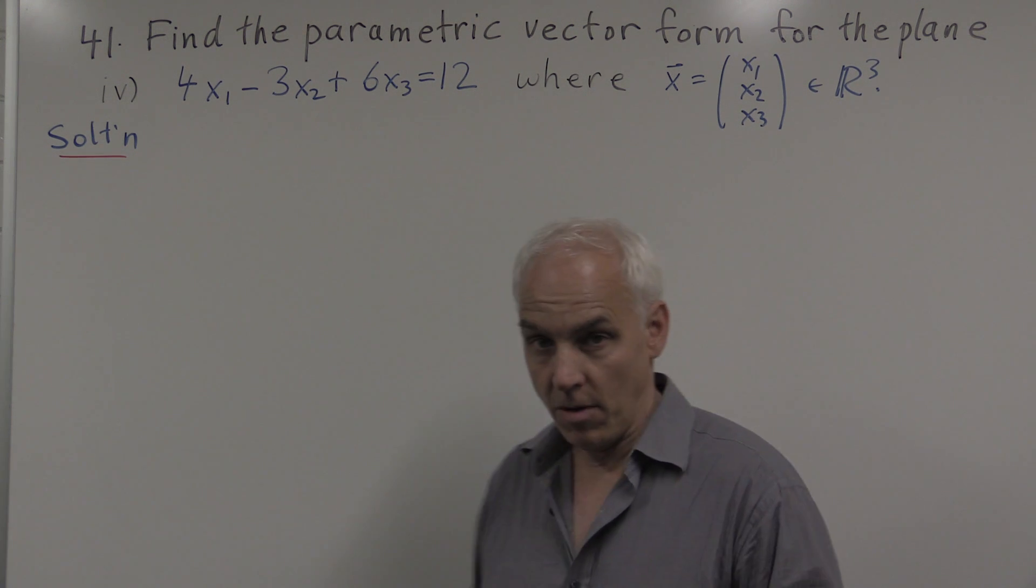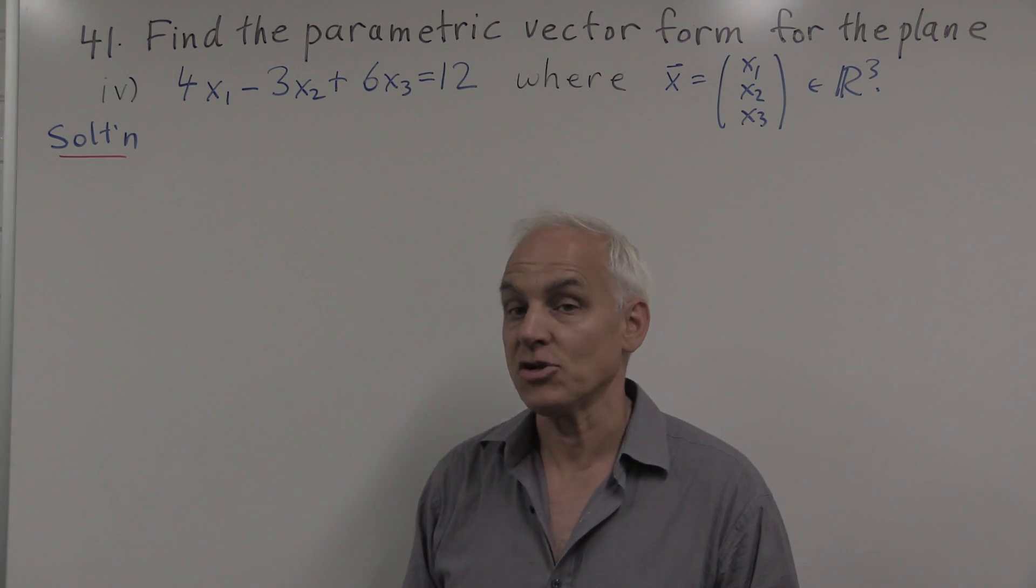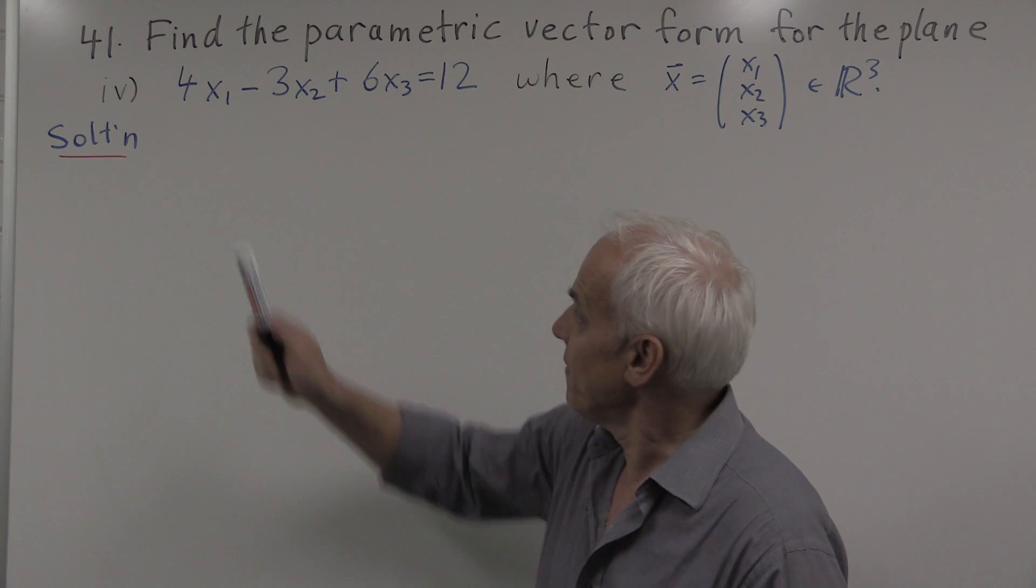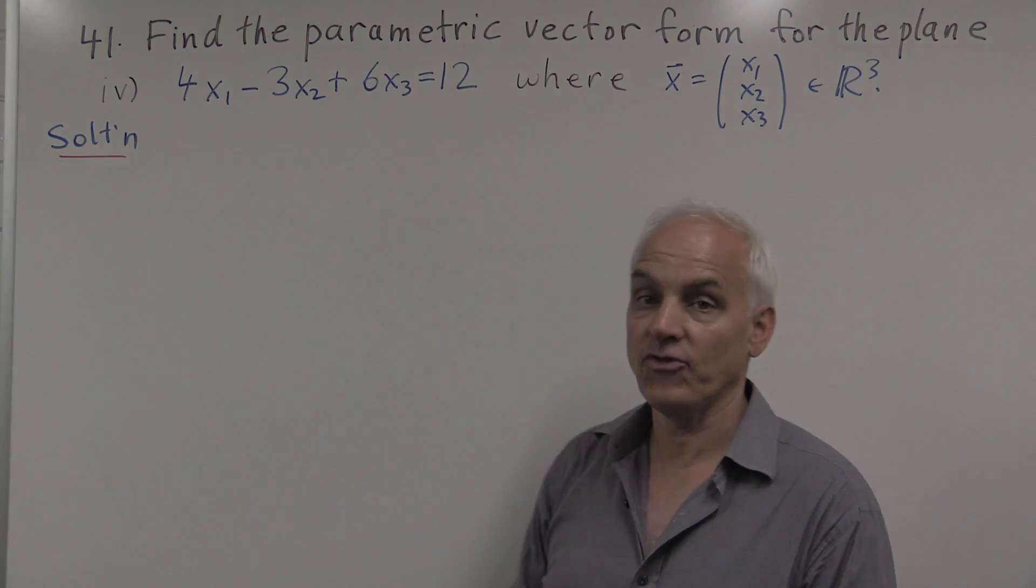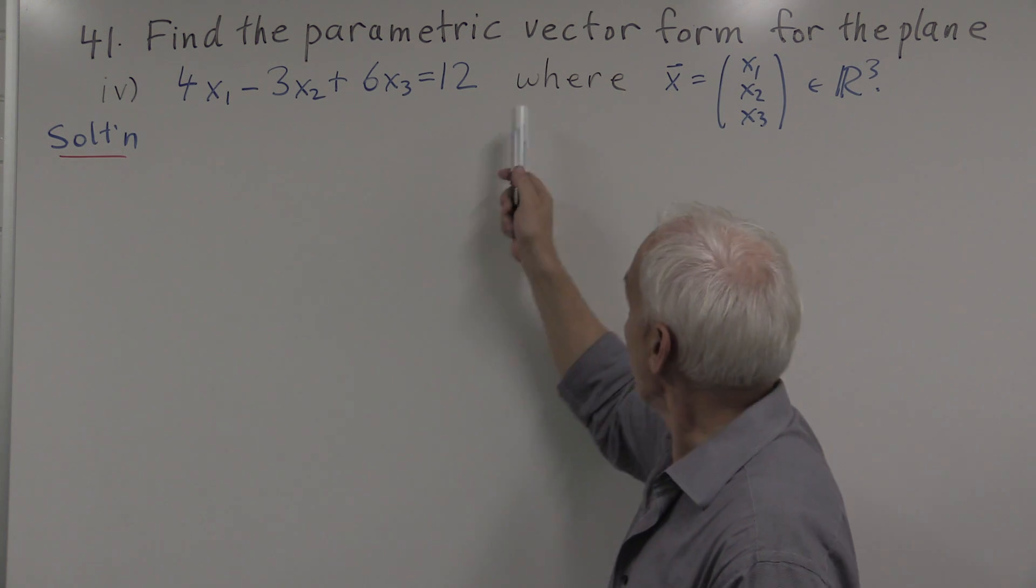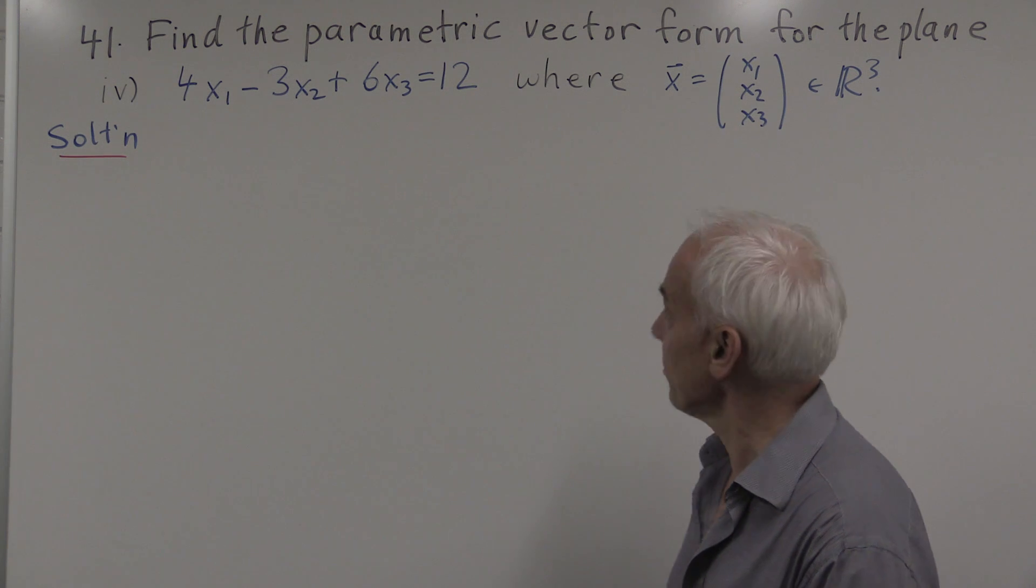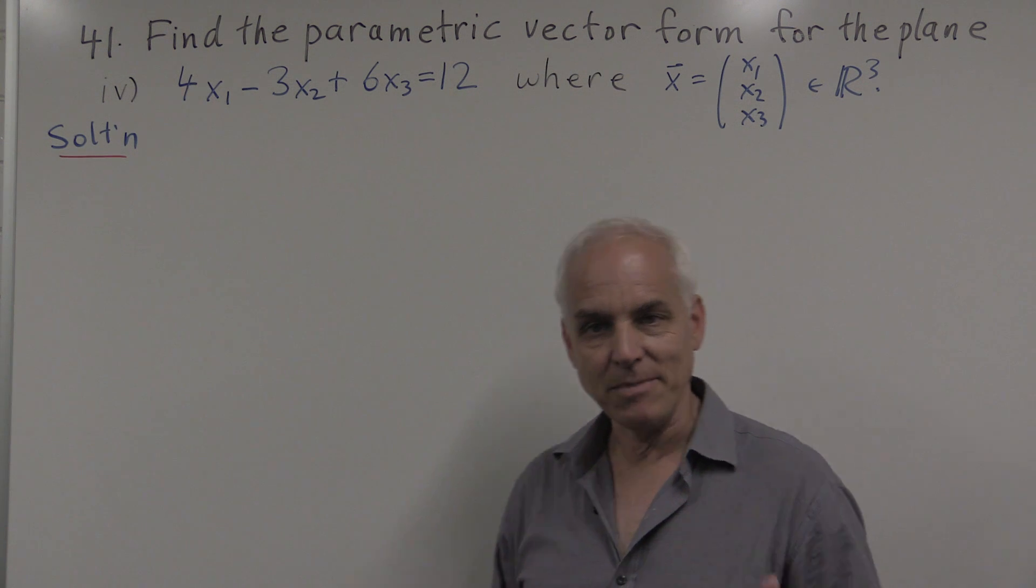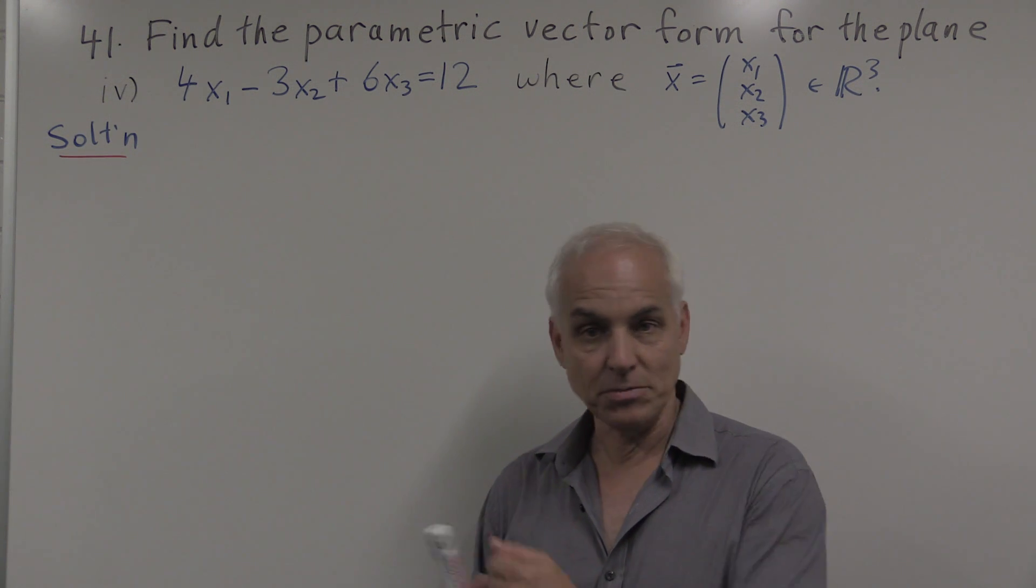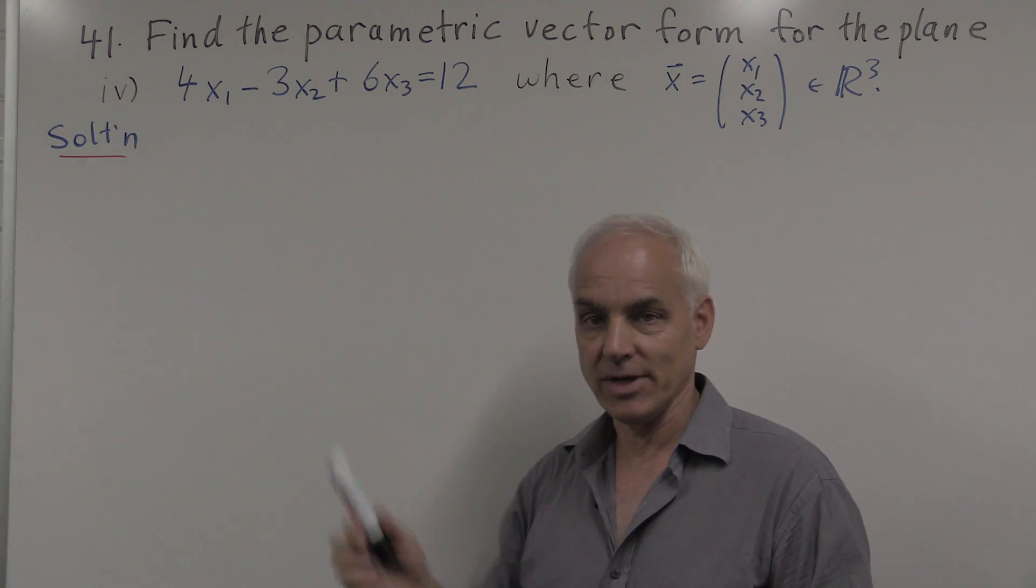So here we have part four of the problem, where the plane is given in a different way. It's given as a Cartesian equation: 4x1 minus 3x2 plus 6x3 equals 12, where we're told that the general vector x in three-dimensional space R3 is x1, x2, x3. We have to be prepared that sometimes three-dimensional space is described in terms of x, y, and z, and sometimes in terms of x1, x2, x3 as here.